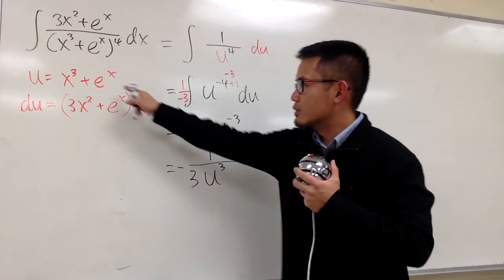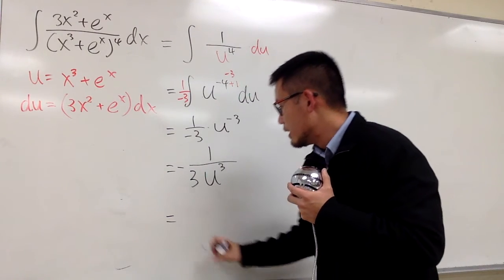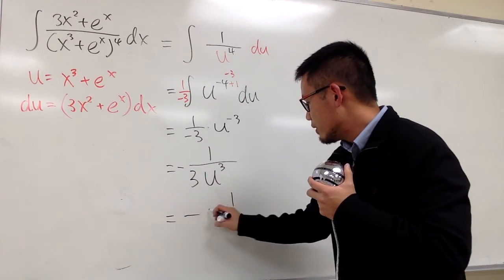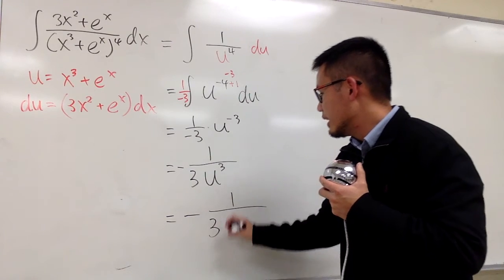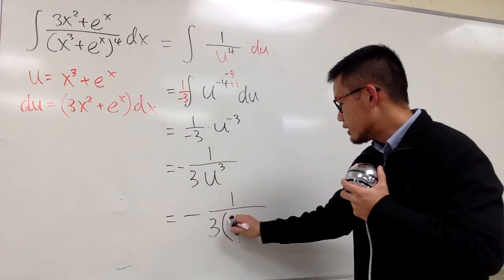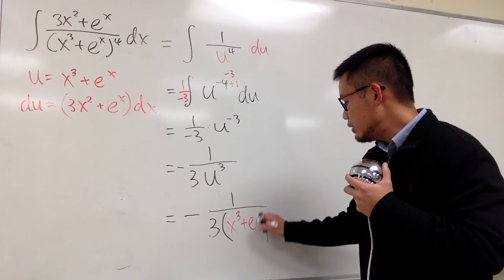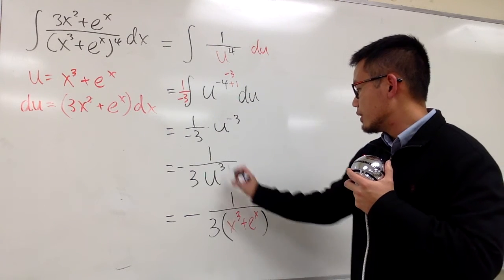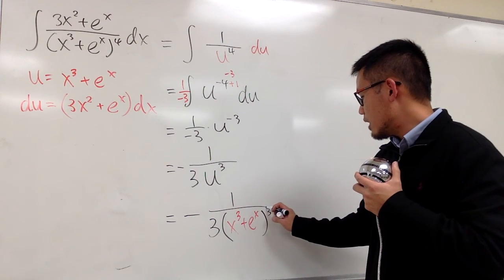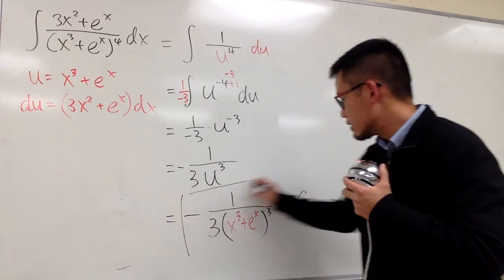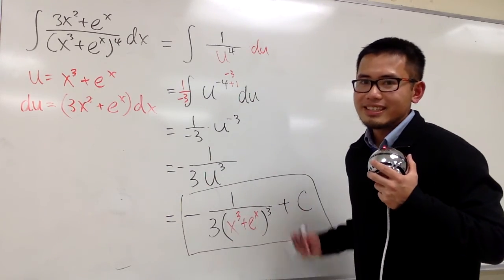And I can write the u back to that. So finally, this is negative 1 over 3 in the front, like this. And then u is x to the third power plus e to the x, and then raised to the third power, like that. And at this point, we are done. Plus c. That's it.